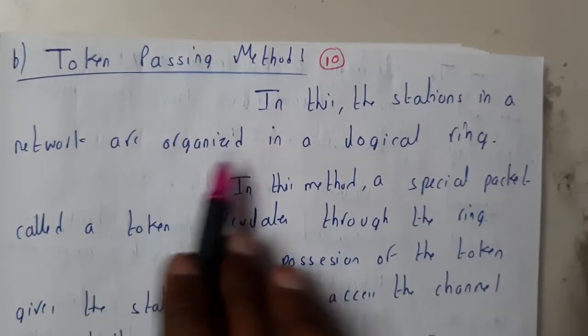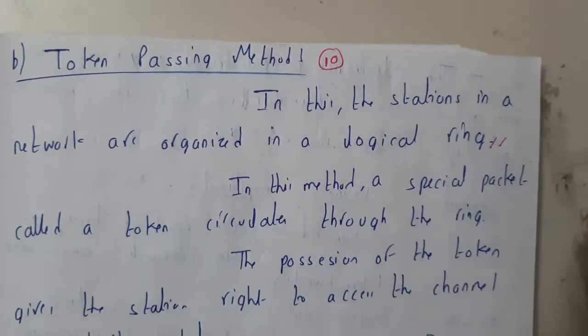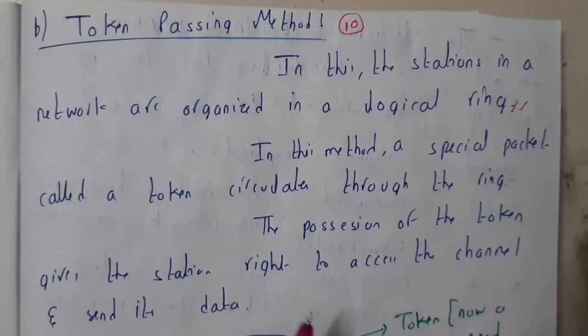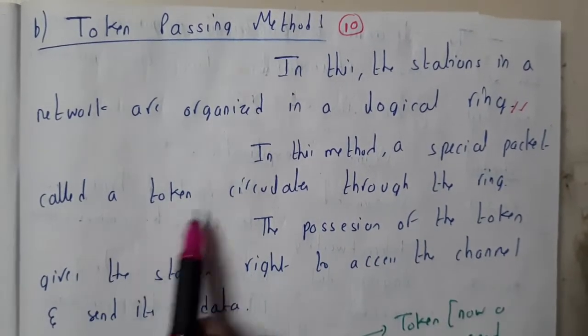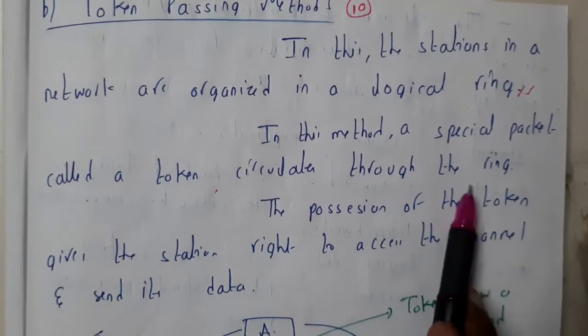In this, the stations in a network are organized in a logical ring. They will be in one after the other format. In this method, a special packet called token circulates through the ring in a clockwise direction.